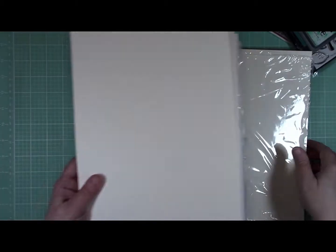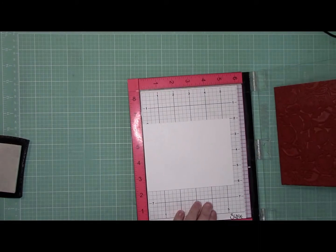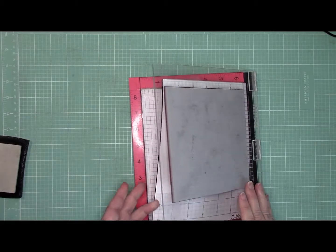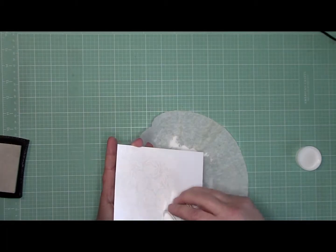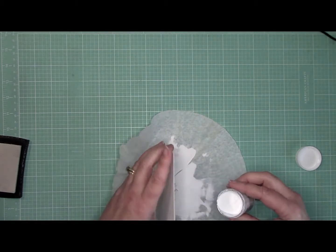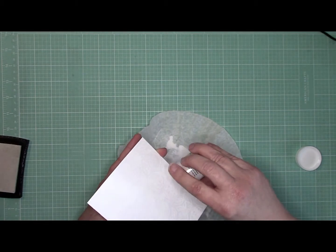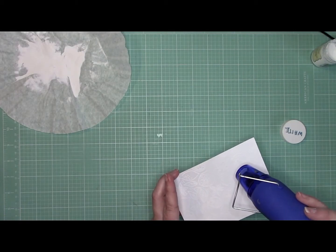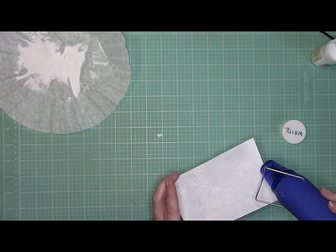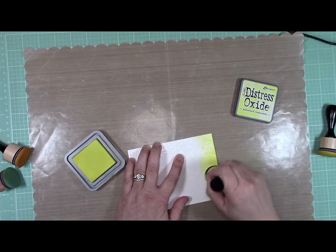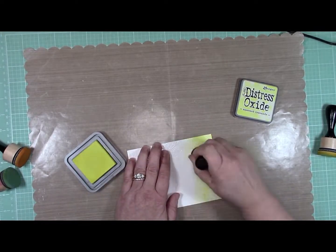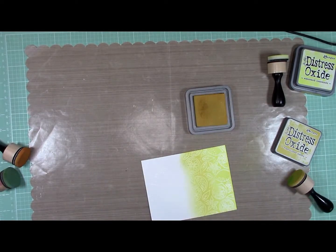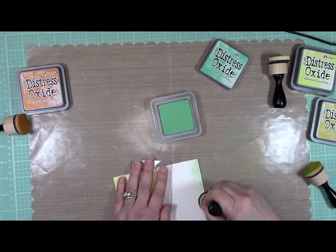I'll start my panel by inking up the background stamp with Versamark watermark ink, and then I'm going to pour the Ranger fine detail embossing powder in white over the top of that, shake off my excess, and then I will heat emboss that. I'm using the Neenah solar white for this panel. This cardstock really works great for inking up like I'm going to use today, but it also works really well with Copics. It's a nice heavy cardstock, it's nice bright and white so colors show true through it, and it's really easy to blend on thanks to its smooth finish.